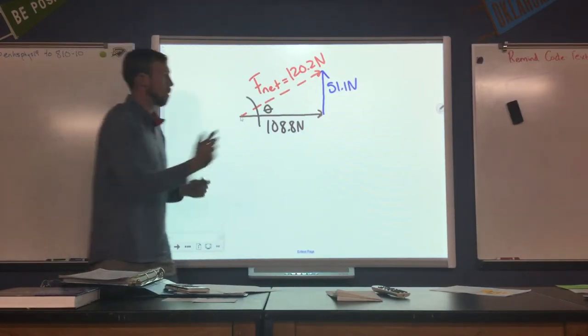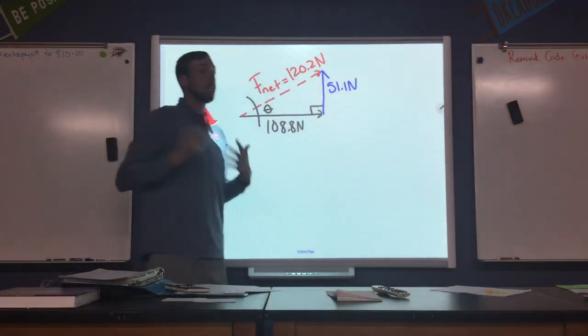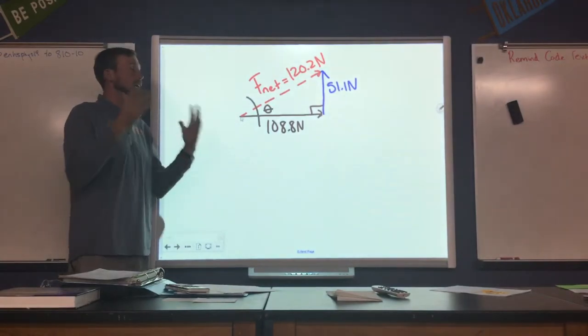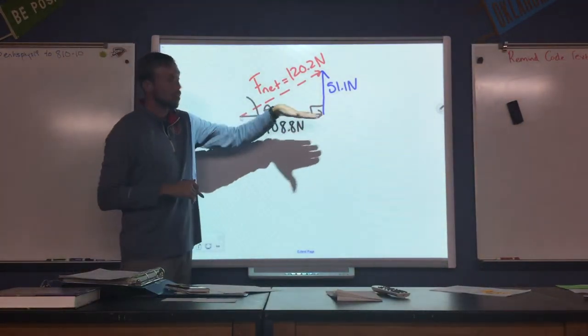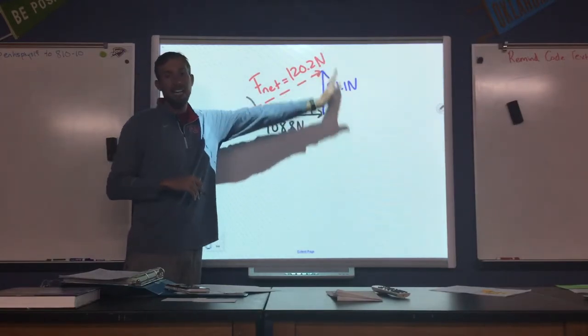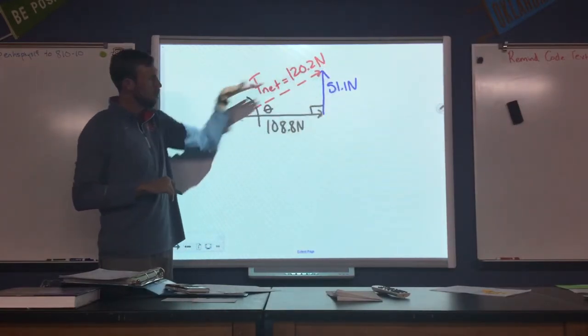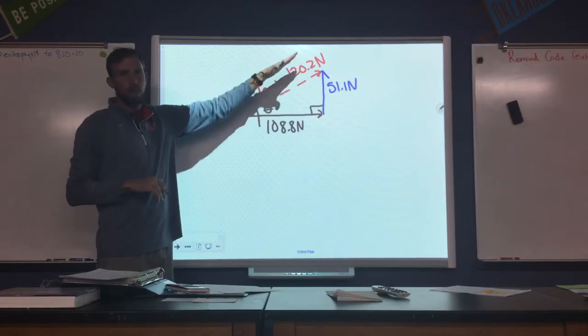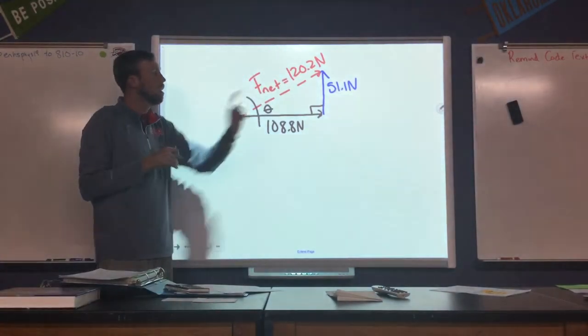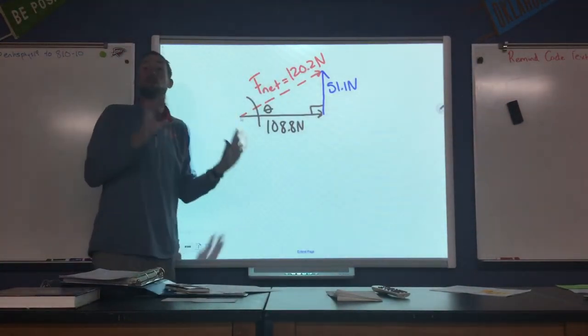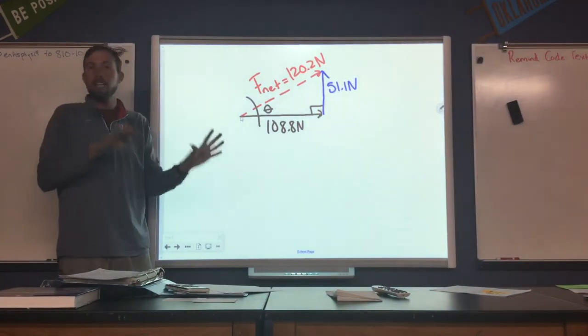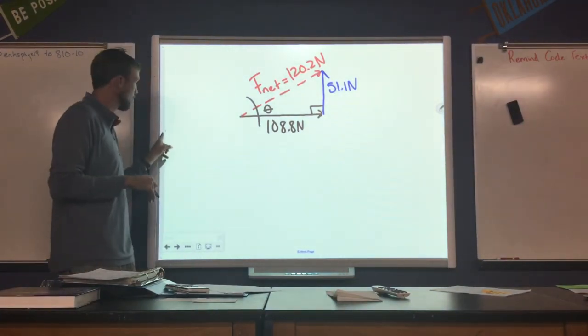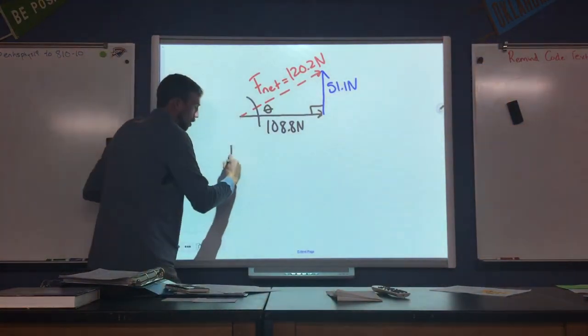Since we have all three sides of our right triangle, we can use any trig function that we would like to. The default that I would use is tangent here because we are given the base, the force east, and the height, the force north. We may or may not have made a mistake in rounding earlier. I think we have a pretty good value. But just in case, we can use what the problem gives us to minimize the possibility of making an error.